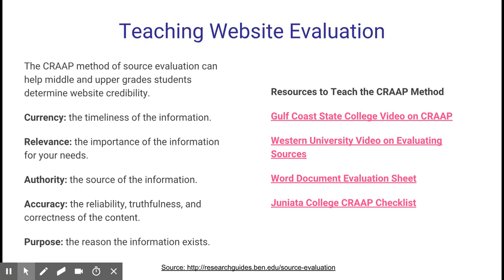One way you can teach website evaluation is using the CRAAP method. The CRAAP method of source evaluation can help middle and upper grade students determine website credibility. The components include: Currency — the timeliness of the information and when it was produced — and Relevance — how does it relate to your needs.